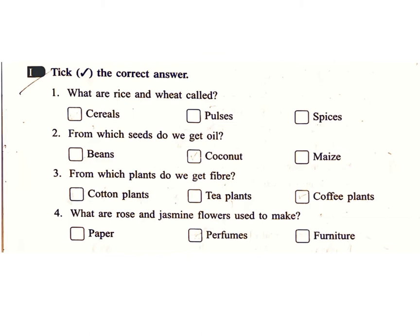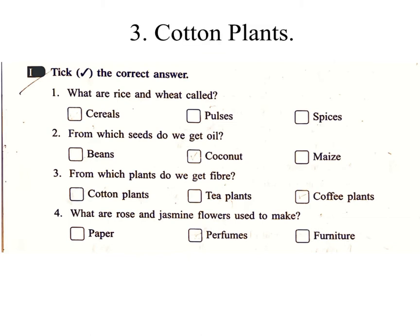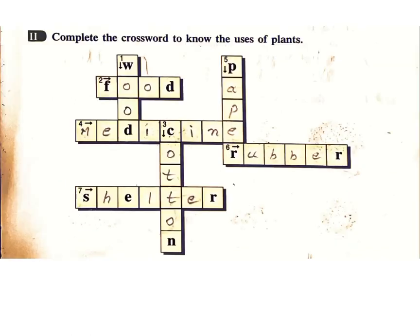Exercise 1 – Choose the correct answer. 1. What are rice and wheat called? Answer: Cereals. 2. From which seeds do we get oil? Answer: Groundnut. 3. From which plants do we get fiber? Answer: Cotton plants. 4. What are rose and jasmine flowers used to make? Answer: Perfume.